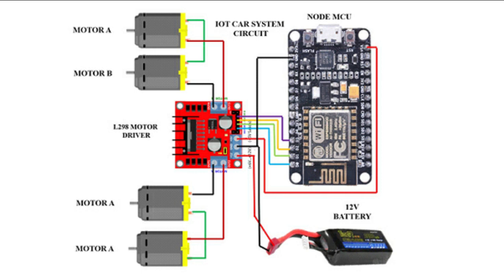So by making all the connections you can operate your device. Now you have seen how the connections of this particular IoT car will be. Now let us go to the actual model — how we can build it and what all things we need.